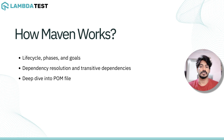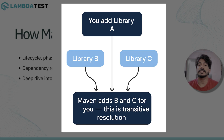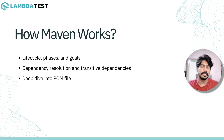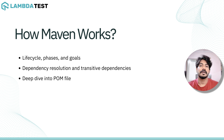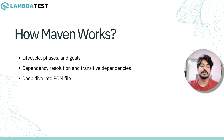Maven automatically resolves transitive dependencies — meaning dependencies of your dependencies. For example, if you add library A which internally depends on libraries B and C, Maven adds B and C for you automatically. A real-world example: Selenium version 4 internally depends on Chrome or Firefox driver dependencies, so when you add Selenium, those are pulled in transitively. For conflict resolution, if two dependencies bring different versions of the same library, Maven uses the nearest definition in the dependency tree. You can inspect this using the command mvn dependency:tree, which we'll cover in a future video.